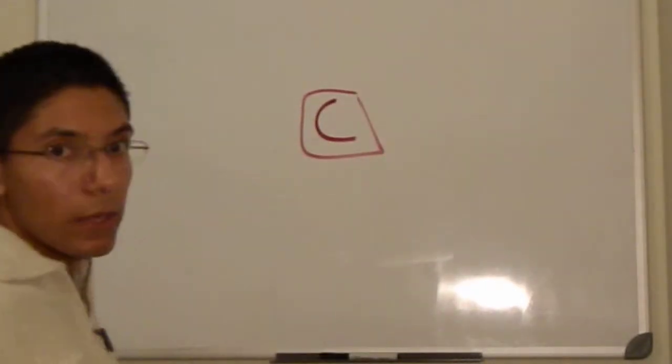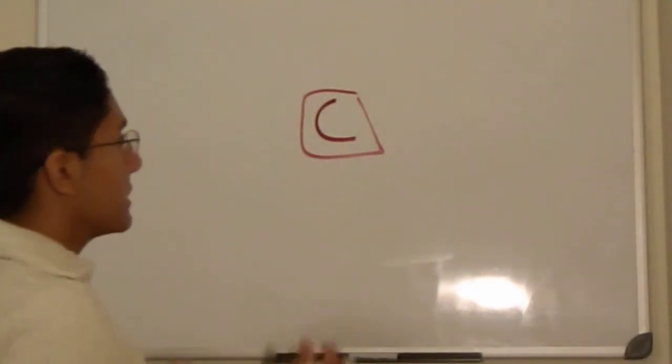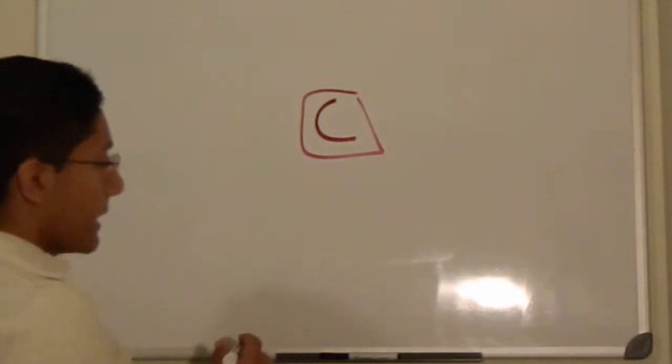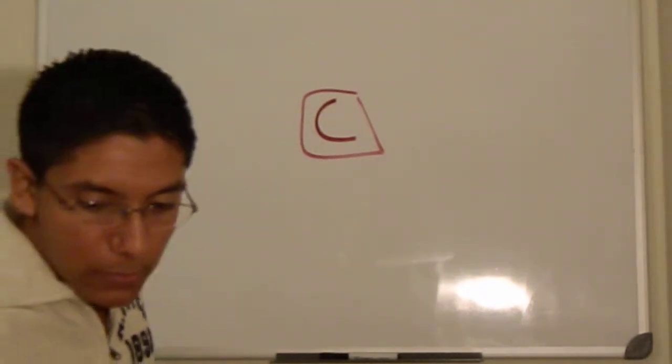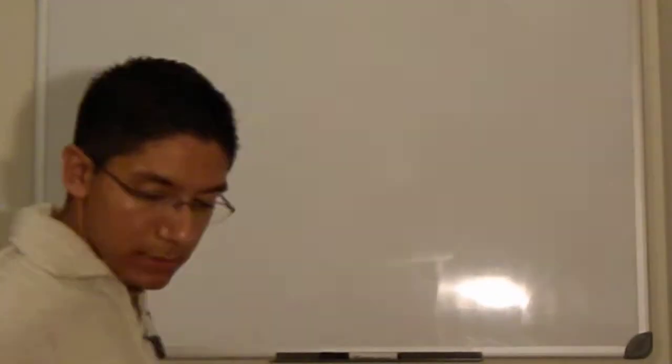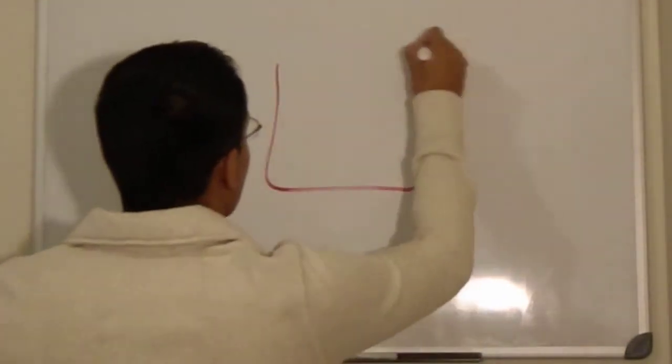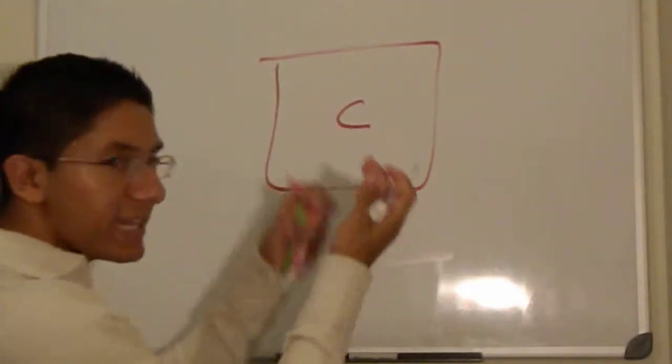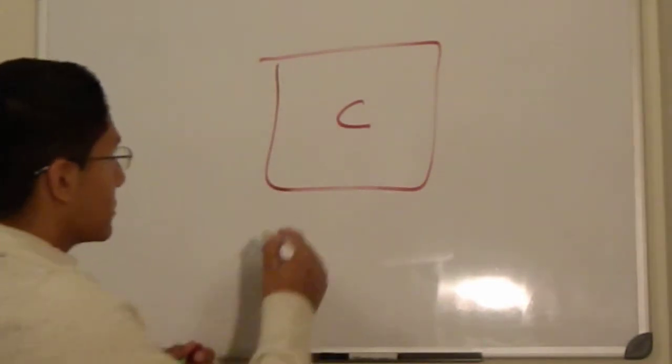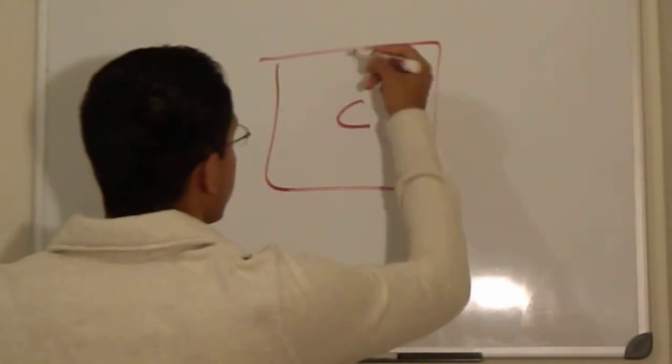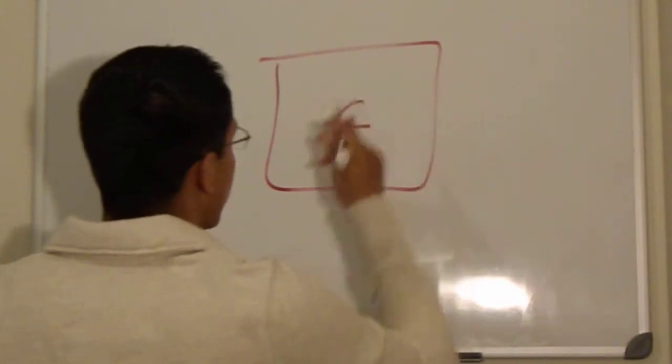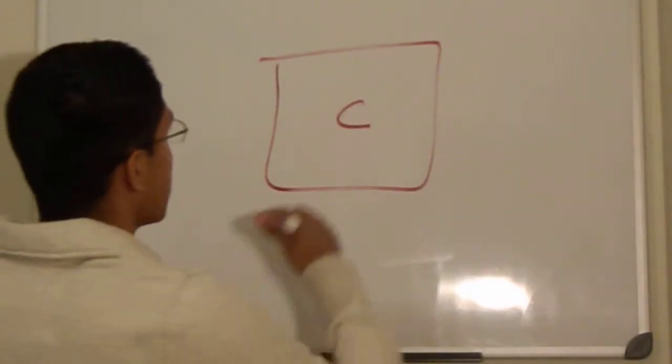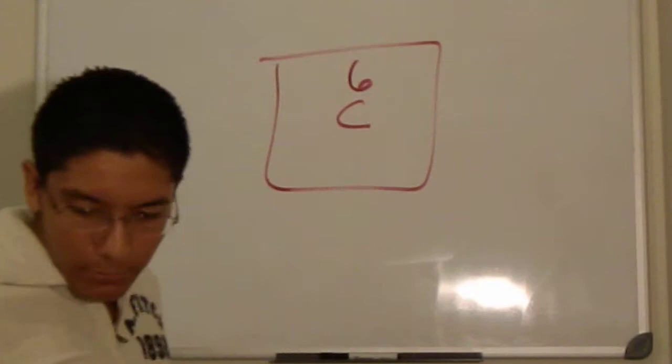Now in the periodic table, every element has a box. Okay, carbon, carbon, and they'll write it in different ways, but for this time I'm just going to write it.